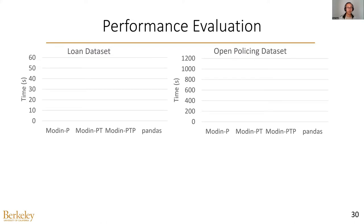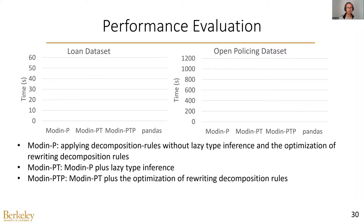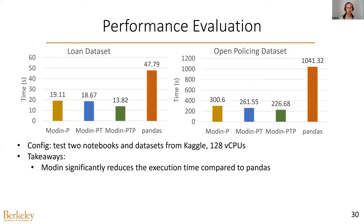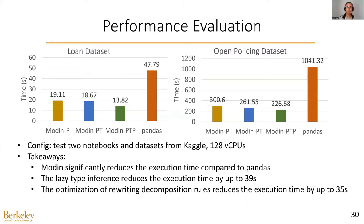Let's look at the experiments. We test three Modem variants: Modem P, which applies decomposition rules without lazy type inference and without the rewriting optimization; Modem PT, which adds lazy type inference; and the third variant, which further adds the rewriting optimization. We test two notebooks and datasets from Kaggle and run the experiment on a machine from AWS. We find that Modem significantly reduces execution time compared to Pandas. The lazy type inference reduces execution time by up to 39 seconds, and the rewriting optimization further accelerates Modem by up to 35 seconds.